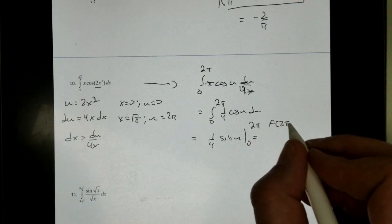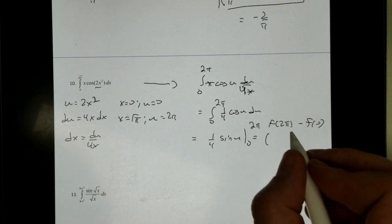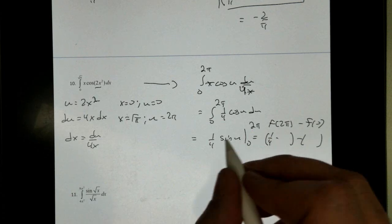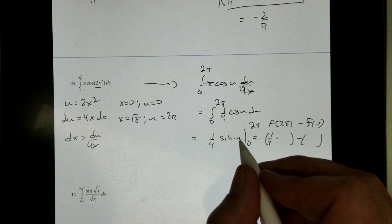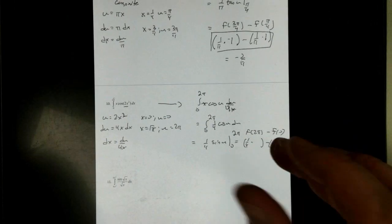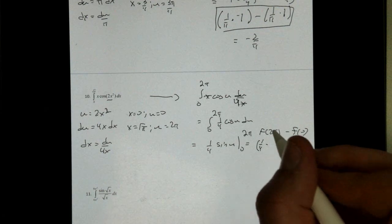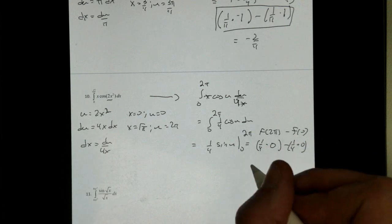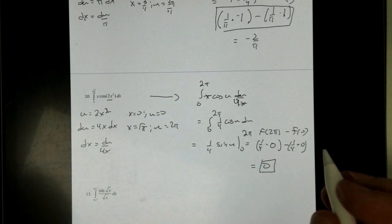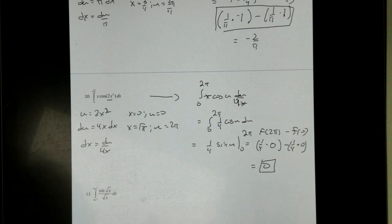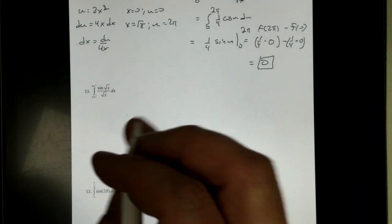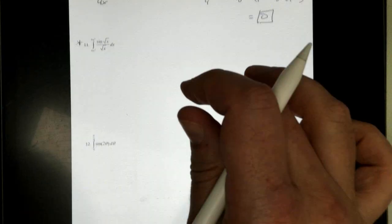We get f of 2 pi minus f of 0. And again, let's see if we can do the trig in our head. It's a lot faster if we can do it in our head. We're going to get 1 fourth, the sine of 2 pi is 0, minus 1 fourth here, and the sine of 0 is also 0. That's interesting, we just get a 0. Now what's interesting, this is saying that the area is 0 there. All right, so go ahead and try the next couple on your own there real quickly. Number 11 here, on your own. I'm going to go ahead and jump to number 12, because, you know, I can, I'm the teacher.